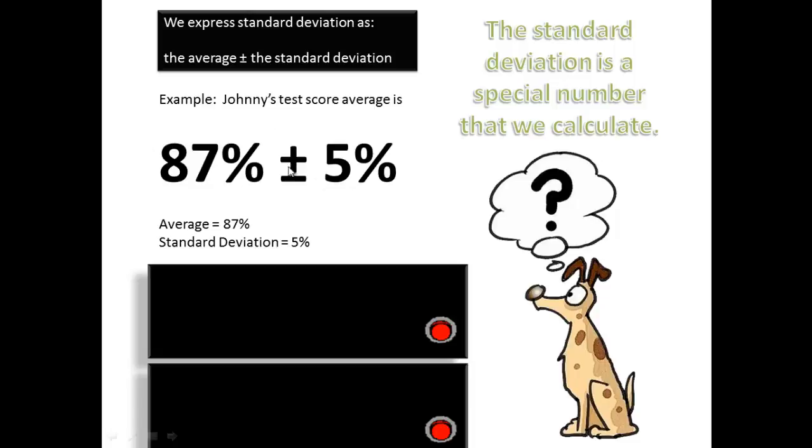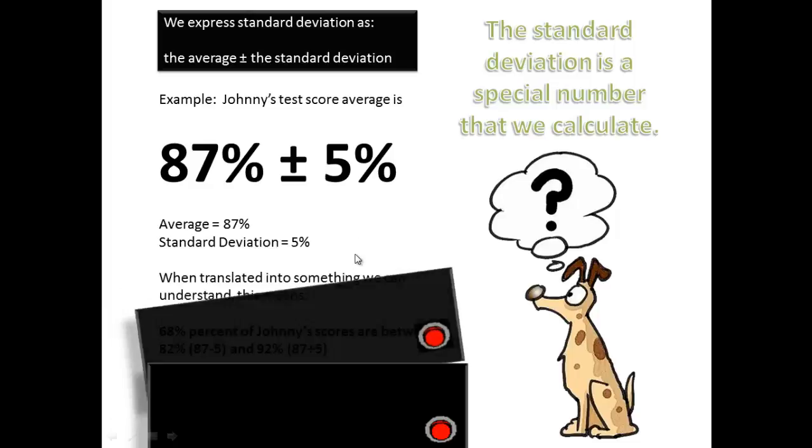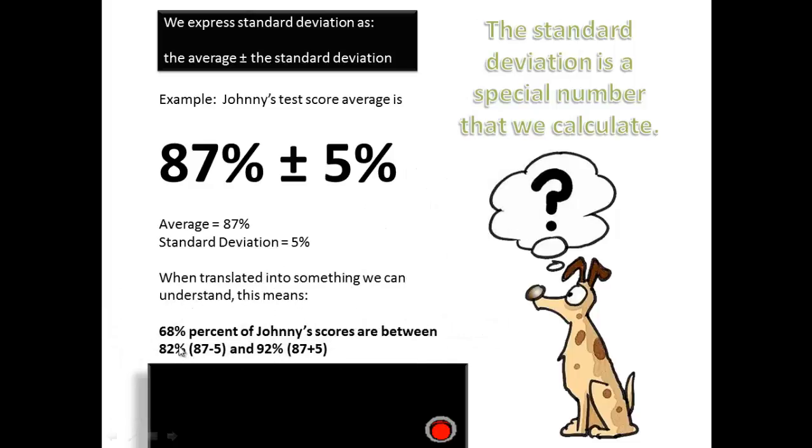What does that mean? Well, that means his average is 87%, and his standard deviation is 5%, and we always do plus or minus. So that means 87 plus 5, which is 92, and 87 minus 5, which is 82. And that gives us an idea that most of his scores are between 82% and 92%. Now this number right here, let's just ignore that for the moment. I'll explain that in a second here.